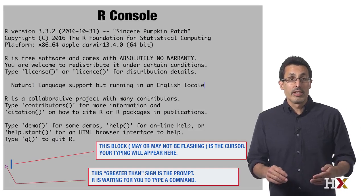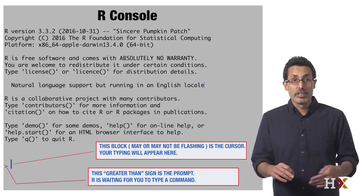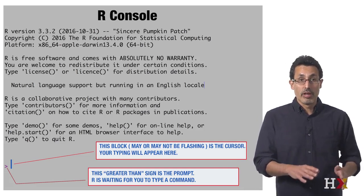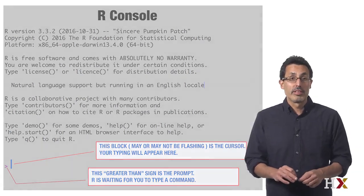The console looks something like this. You can see that you have some information about R, which version it is, etc. And then towards the bottom, you see a greater than sign and a cursor. That is where you type your commands.